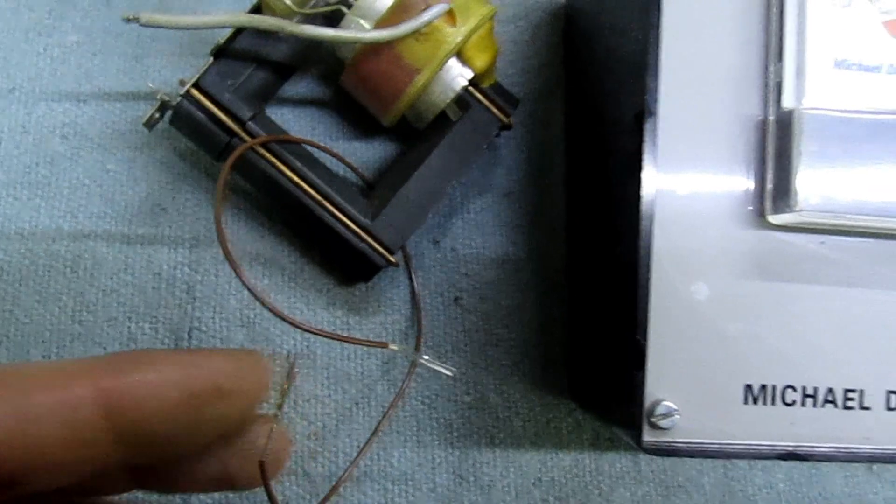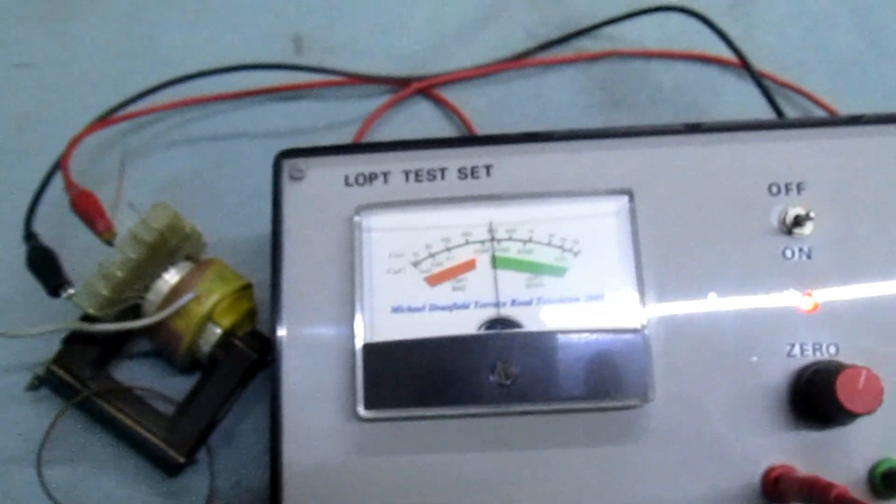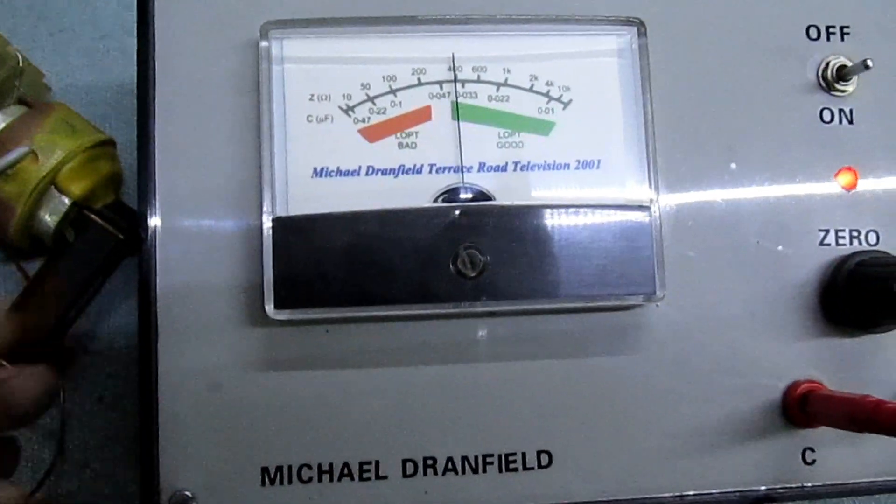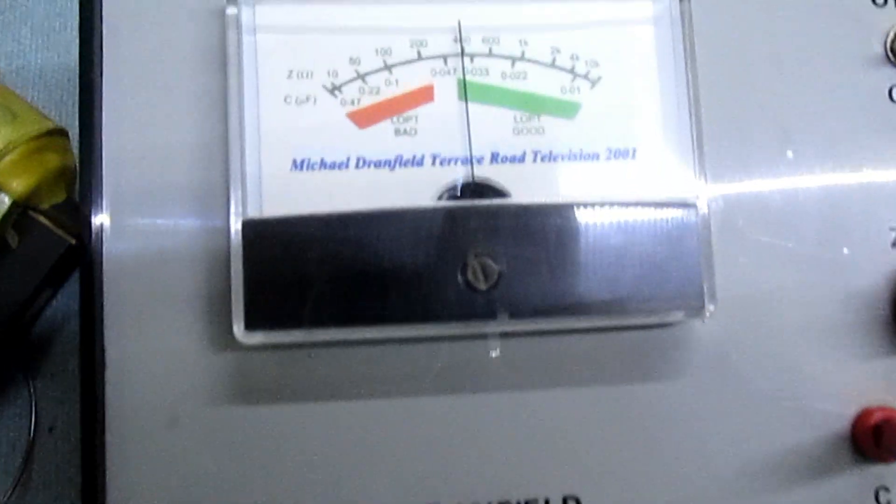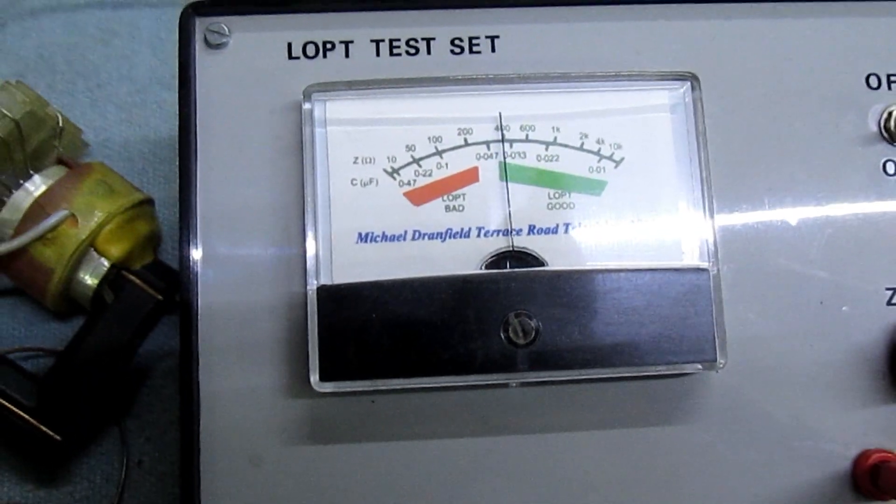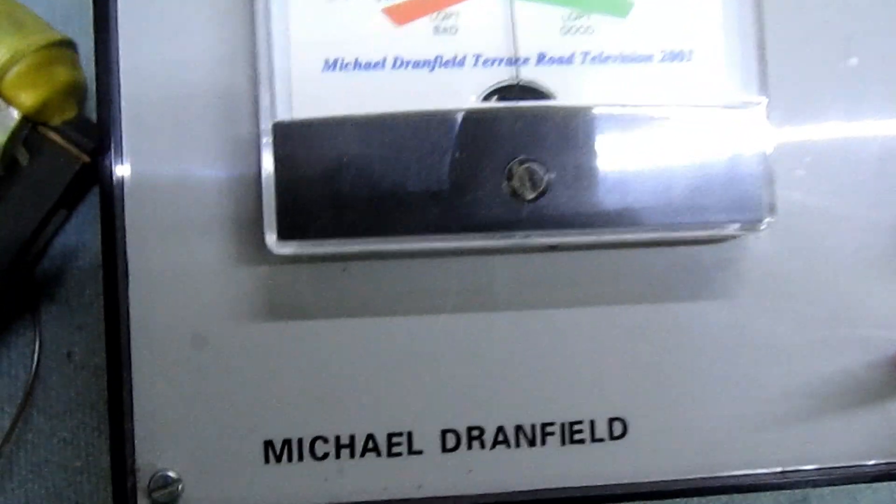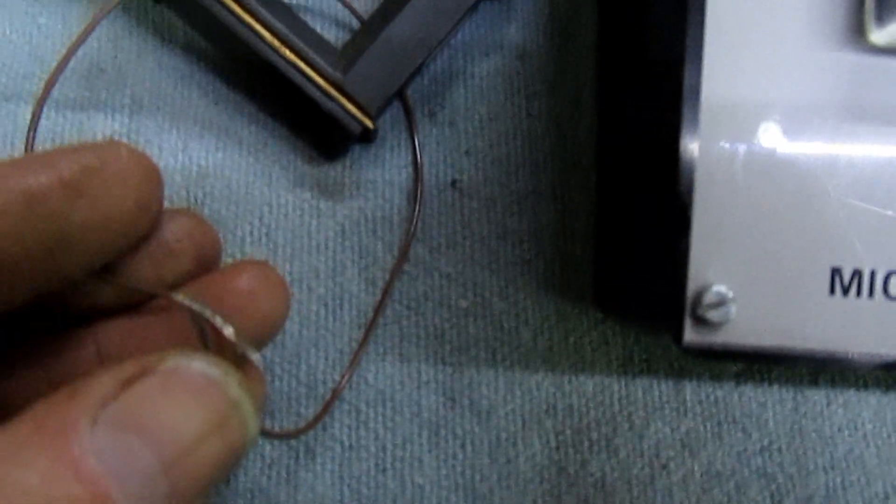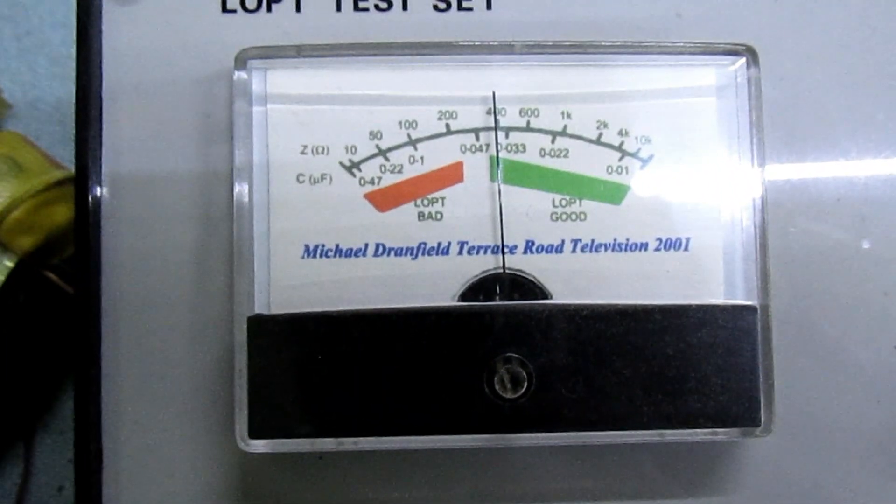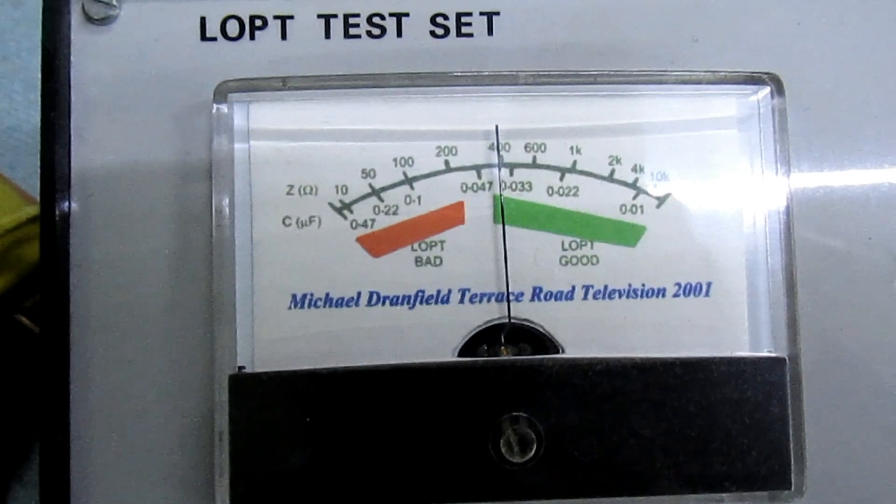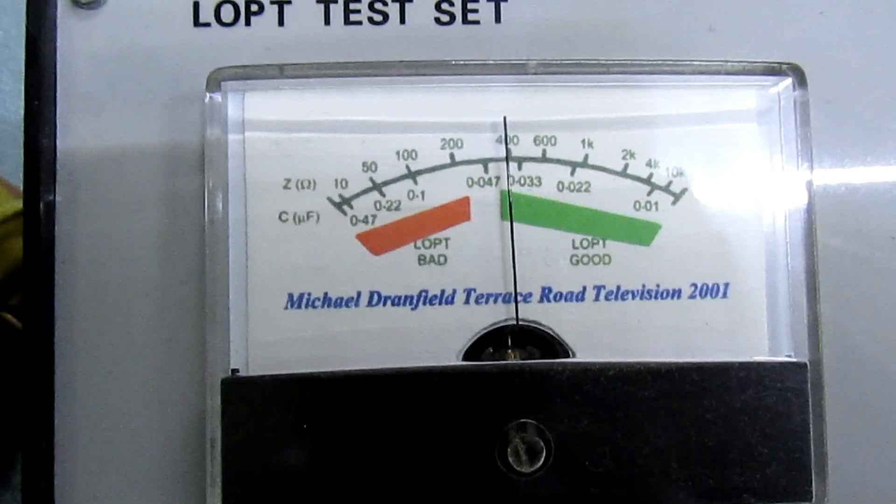So there we go. Trying to hold the camera at the same time, not easy. Let's see if we can hold them right. So I'll just touch them together to make the shorted turn. If you look at that, it's saying transformer good.